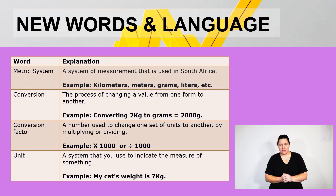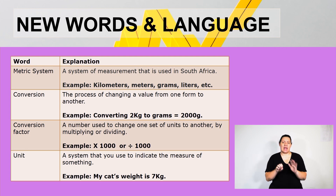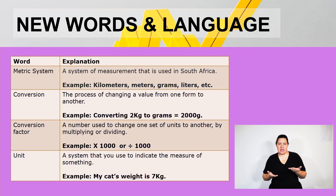A unit refers to a system that you use to indicate the measure of something — for example, we would say my cat's weight is seven kilograms. For now, I want us to go on an ad break, and then we'll come back with more activities when we return.